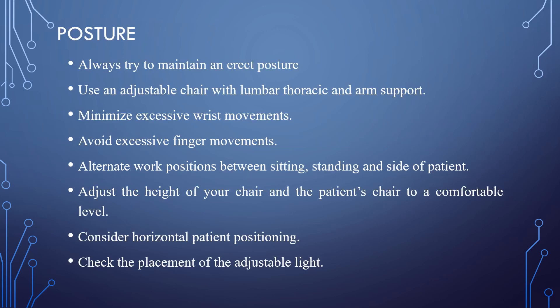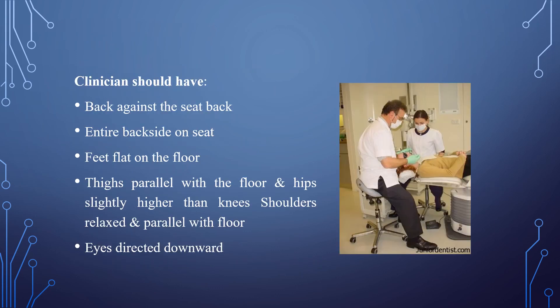Posture — one of the interventions we can do is to always try to maintain an erect posture, use an adjustable chair with lumbar, thoracic and arm support, minimize excessive wrist movements, avoid excessive finger movements, alternate work positions between sitting and standing and sides of the patient, and adjust the height of your chair and the patient's chair to a comfortable level. Consider horizontal patient positioning and check the placement of the adjustable light. The clinician should have the back against the seat back — as shown in the picture — with the entire back on the seat, feet flat on the floor, thighs parallel with the floor, hips slightly higher than knees, shoulders relaxed and parallel with the floor, and eyes directed downwards.